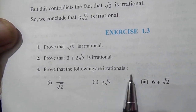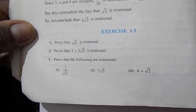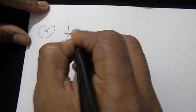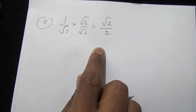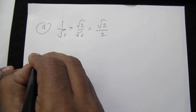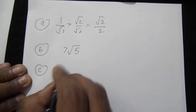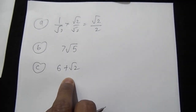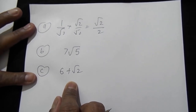For question 3, proving the following are irrational: (i) 1/√2 — you can rationalize by multiplying to get √2/2, then proceed similarly. (ii) 7√5 — done in the same way. (iii) 6 + √2 — also done similarly. Try these questions yourself.